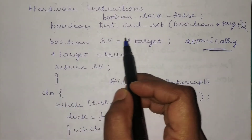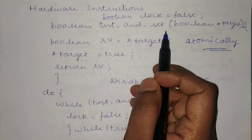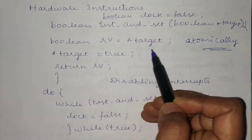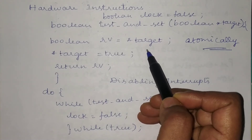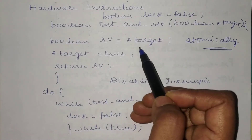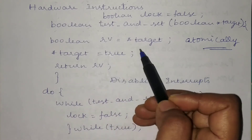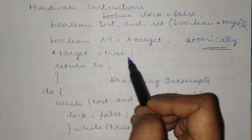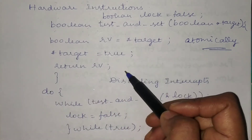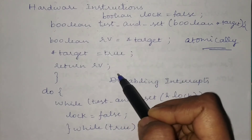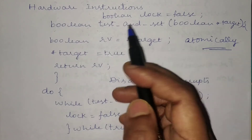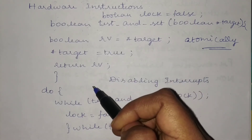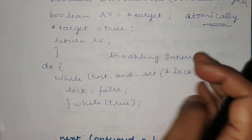The first hardware instruction is Test-and-Set. It is a finite hardware instruction and is of type boolean. It is used to check a particular shared variable that can be accessed by more than one process. That variable can be either false or true. We also have a set of instructions to swap values between two variables, and this is done atomically so that we receive the correct output.